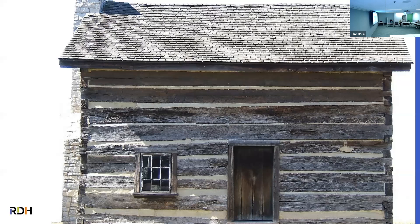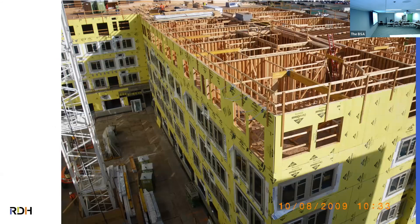Building enclosures back in the day looked something like this — pretty simple. The structure performs all the functions; it's also 'waterproof' and 'airtight' in air quotes. Today we're dealing with something a little bit more complex. As we've learned over the years, we've slowly seen building enclosure construction evolve and become increasingly more complex. So today what we're hoping to do is look at a way to simplify our approach to design so that we stay out of trouble with the increasing complexities.